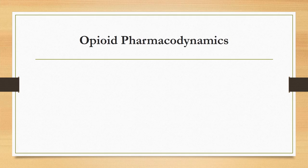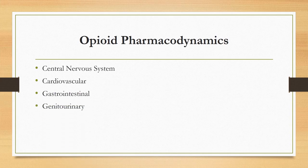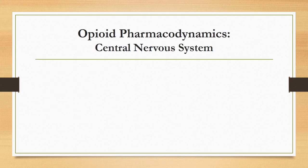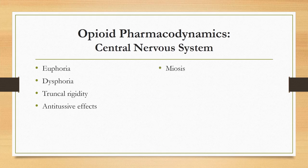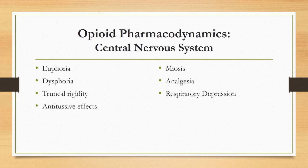Opioid pharmacodynamics in the central nervous system include euphoria, dysphoria, truncal rigidity, antitussive effects, miosis, analgesia, and respiratory depression. Euphoria is the feeling of well-being in awake patients and will vary depending on the agent utilized. Those opioids with strong mu receptor affinity, such as fentanyl, will produce a greater euphoric feeling than those with stronger kappa affinity.